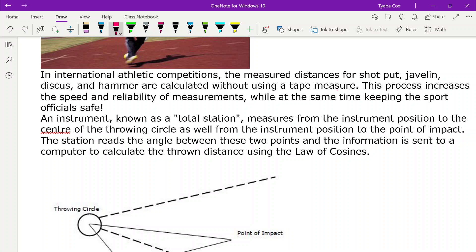An instrument known as a total station measures from the instrument position to the center of the throwing circle as well as from the instrument position to the point of impact.